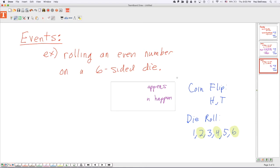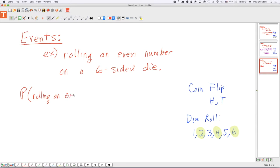Let's see what happens here. Okay, the probability of rolling an even number equals three. Where did I get that three from?